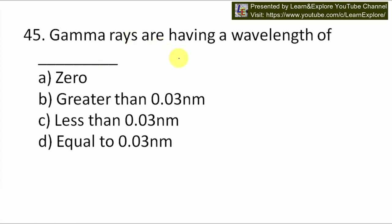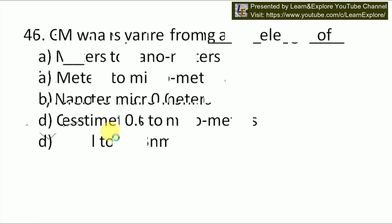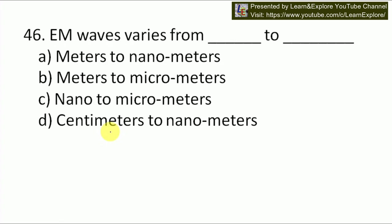Next question: gamma rays are having a wavelength of — greater than 0.03 nanometer, less than 0.03 nanometer, or equal to 0.03 nanometer? Gamma rays have a wavelength of less than 0.03 nanometer. Next question: electromagnetic waves vary from blank to blank — meter to nanometers, meters to micrometers, nanometers to micrometers, or centimeters to nanometers? Our answer will be A — electromagnetic waves vary from meters to nanometers.